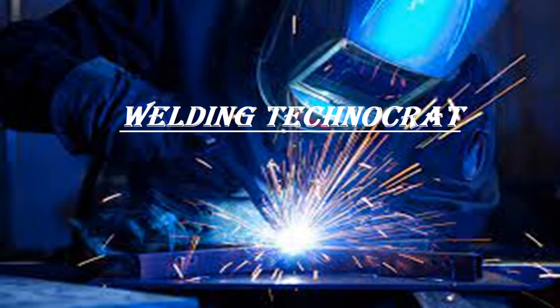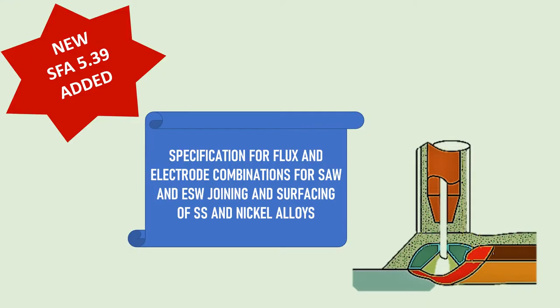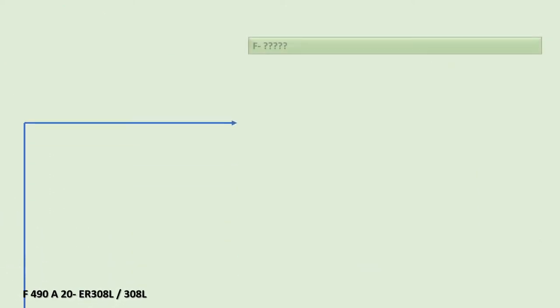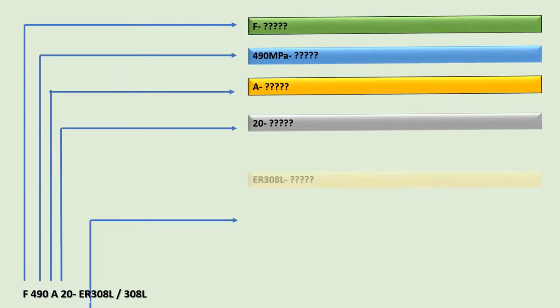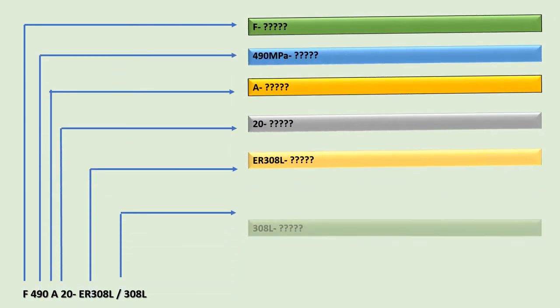Welcome to the Welding Technocrat YouTube channel. Let us now understand the newly added SFA number 5.39, a specification of flux and electrode combinations for SAW and ASW joining and surfacing of stainless steel and nickel alloys. Here you can see the designator for SAW flux-electrode combination. By the end of this video, we'll be able to understand and decipher the designator constituting the flux-electrode classification.